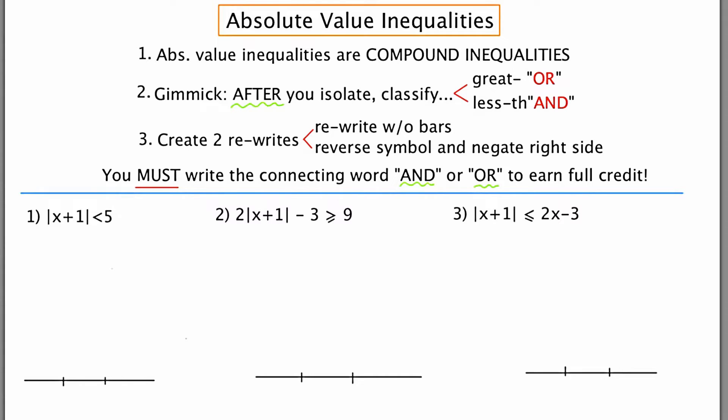To do this you're going to need to isolate the absolute value expression. Once you've done this you're going to look at the inequality symbol and say to yourself greater or less than. After you've done this you're going to write that word down and you're going to create two new inequalities.